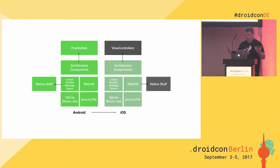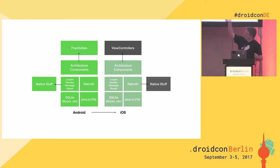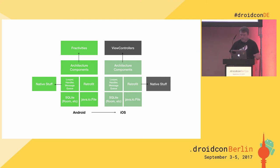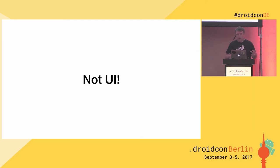So it looks more like this. You've got your native stuff, your activities at the top, and then all of your architectural bits — and as long as you adhere to an MVX architecture and understand that you're going to have to share this code, you don't get into trouble and you can pretty much do this. And then you just implement your stuff on the iOS side. Very clearly, though, this is not UI.